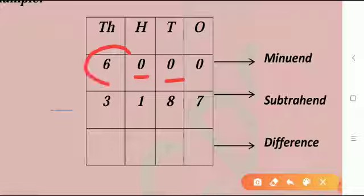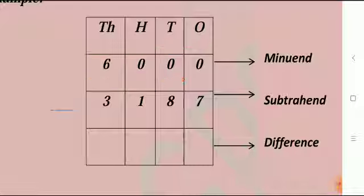So six thousands, zero hundreds, and zero tens is equal to five thousands, ten hundreds, and zero tens. Now ten hundreds and zero tens is equal to nine hundreds and ten tens.